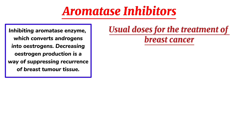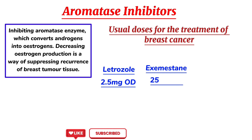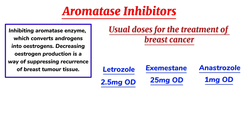Usual doses for the treatment of breast cancer: Letrozole 2.5 mg once daily. Exemestane 25 mg once daily. Anastrozole 1 mg once daily.